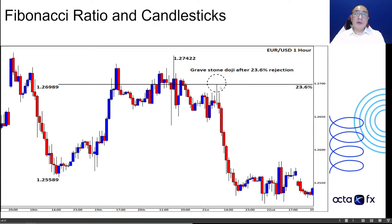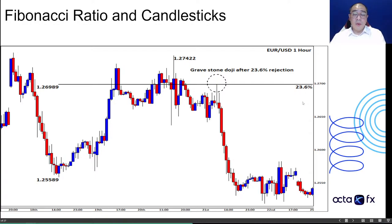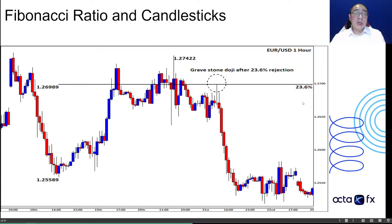You can use doji at a key psychological price level or at a Fibonacci level. You can use it with trendlines, with Fibonacci ratios, with Ichimoku cloud, which is what I've always used it with. There are a lot of options, but what I'm trying to say is just never use candlesticks alone — it's really dangerous. You need to use other tools to verify what you see in the market.